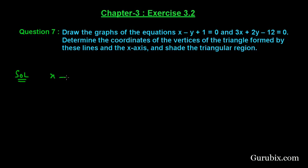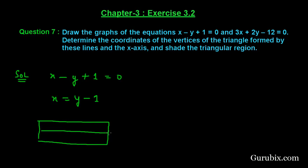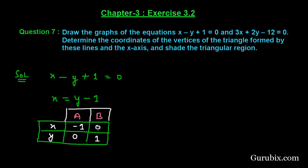First, we write equation 1: x minus y plus 1 equals to 0, and express x in terms of y, giving x equals y minus 1. Drawing a table with 2 rows and 3 columns: if y equals 0, then x equals minus 1; if y equals 1, then x equals 0. We call these point A at (minus 1, 0) and point B at (0, 1).